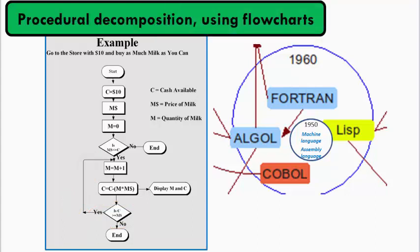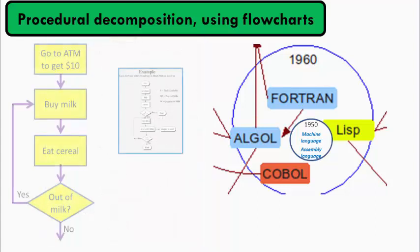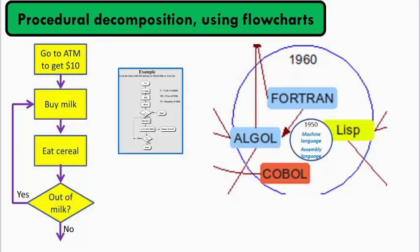This flowchart is for too simple a task for its boxes to be real procedures. But imagine a bigger program, like this one for eating cereal. Again, we use a flowchart, where here the boxes are big enough to be real procedures. For example, the buy milk procedure would be implemented by using a flowchart that we just saw.